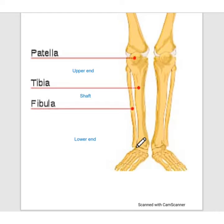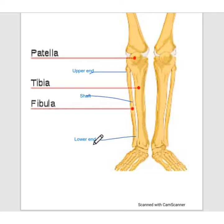It consists of three parts: the upper expanded end, a shaft, and the lower expanded end. Let's discuss these parts one by one.